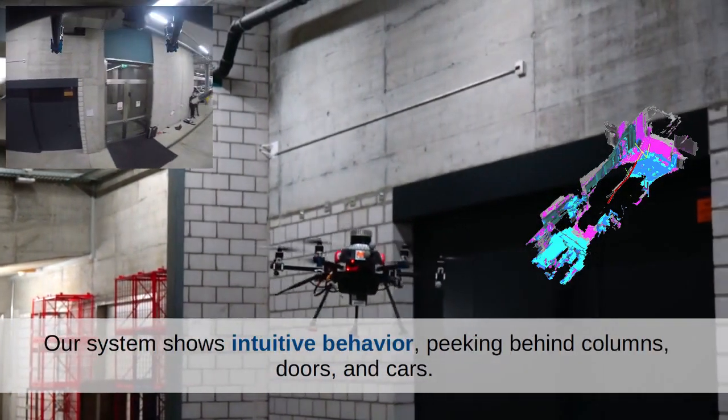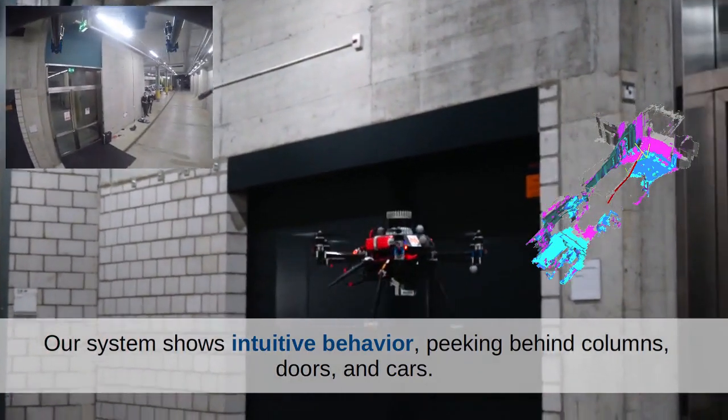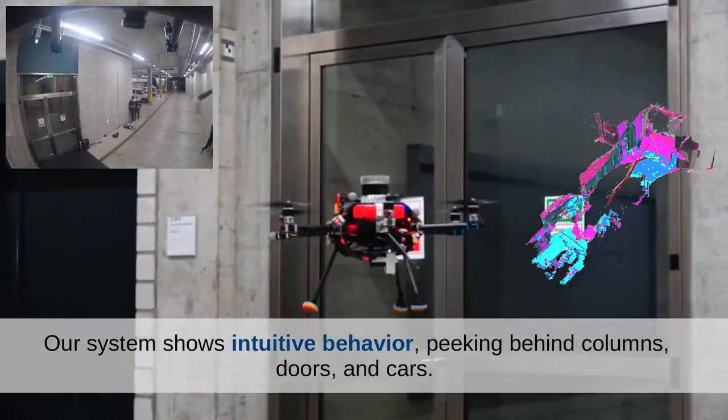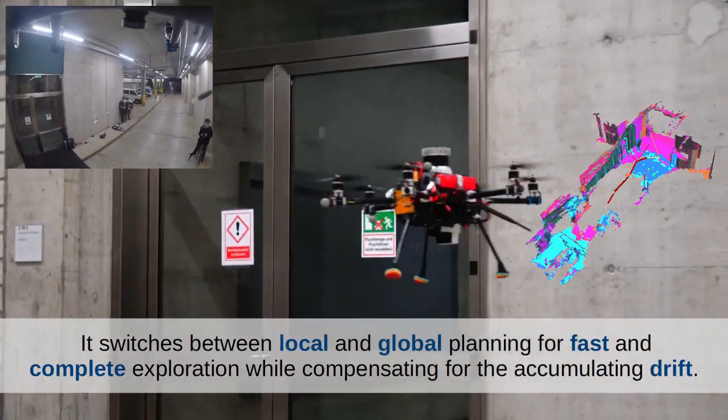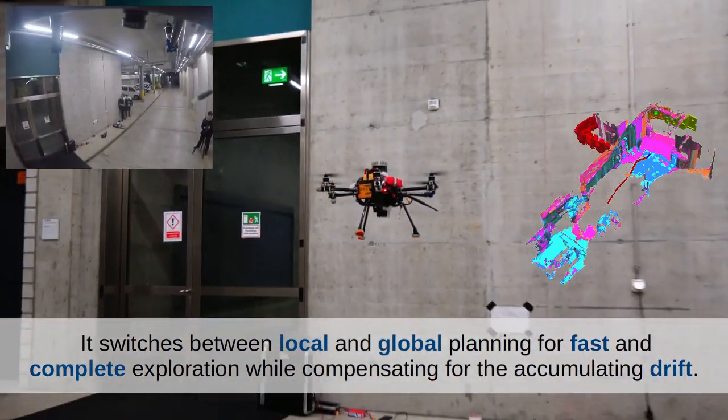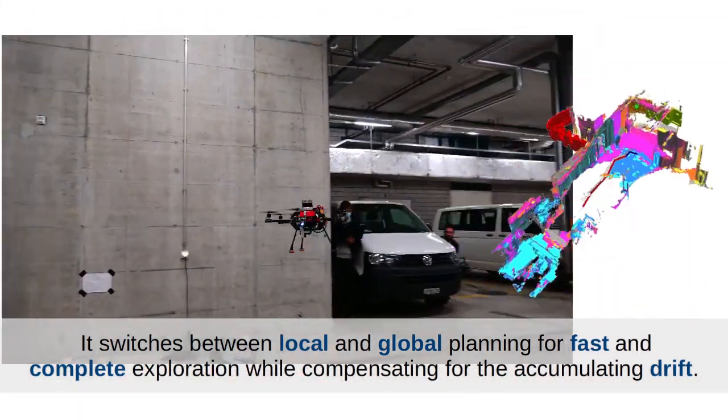Our system shows intuitive behavior, peeking behind columns, doors, and cars. It switches between local and global planning for fast and complete exploration, while compensating for the accumulating drift.